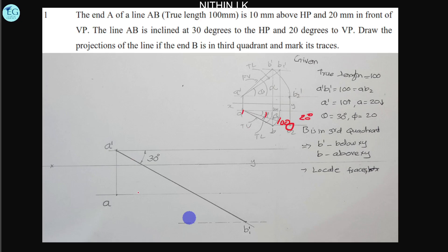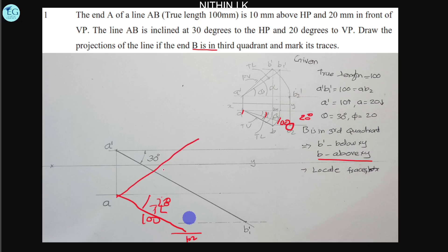We apply the directional locus method here. Because end B is in the third quadrant, A-B true length is 100mm. This is the condition under which we apply the directional locus. So we draw A-B2 at 20 degrees with A-B equal to 100mm.